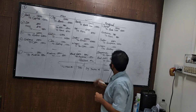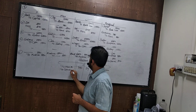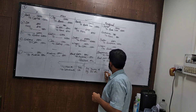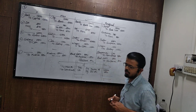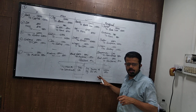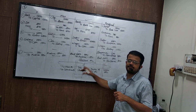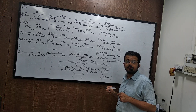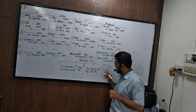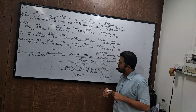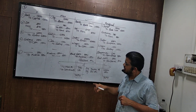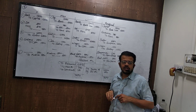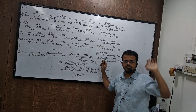Freight paid 8300 was posted twice to the freight account. Correct entry: freight to cash 8300. Wrong entry: freight debit 16,600 — both freight and cash are 8300 each. Reverse: cash to freight. Rectified: suspense to freight, 8300.